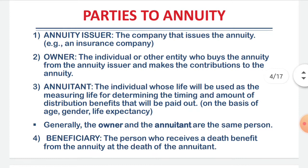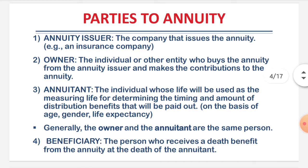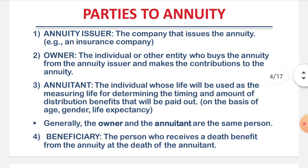Different parties to annuity. The annuity issuer is the company that issues the annuity — for example, an insurance company. The owner is the individual who buys the annuity and makes contributions to it. The annuitant is the individual whose life will be used as the measuring life for determining the timing and amount of the distribution benefits. Generally, the owner and annuitant are the same person.